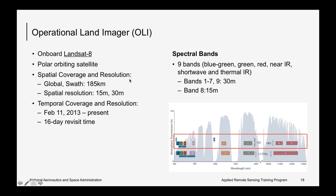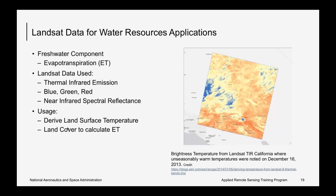The Operational Land Imager (OLI) is the sensor flying on Landsat 8, also a polar orbiting satellite with a swath width of 185 kilometers. OLI has 9 spectral bands ranging from blue, green, and red through near-IR to short-wave and thermal IR, with resolution varying from 15 to 30 meters depending on the band. Landsat 8 was launched in February 2013 and has been flying with a 16-day revisit time.